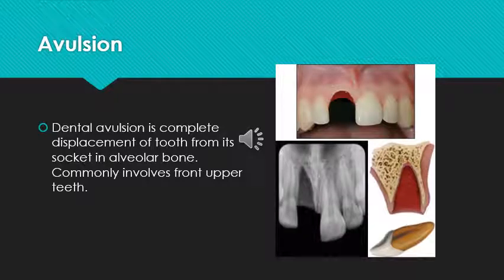So what do you mean by avulsion? Avulsion refers to any injury in which a body structure is torn off completely from its site, either due to trauma or surgery.